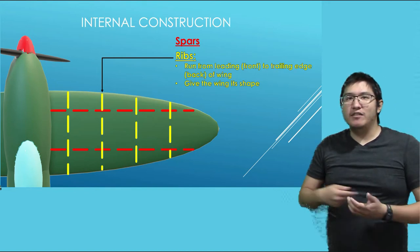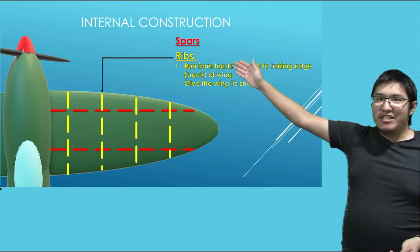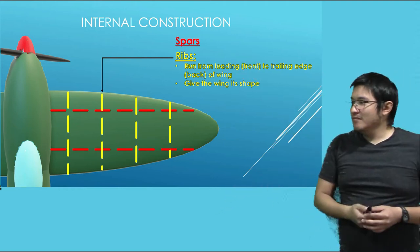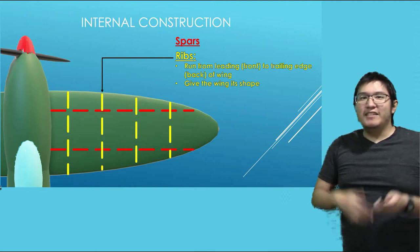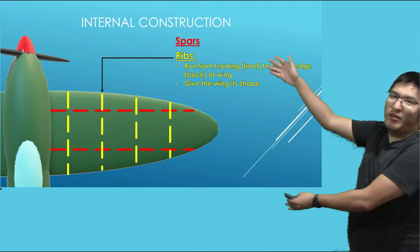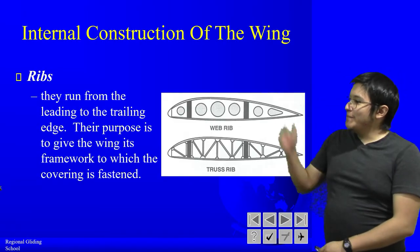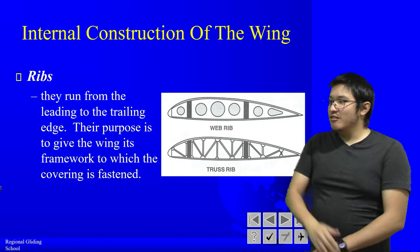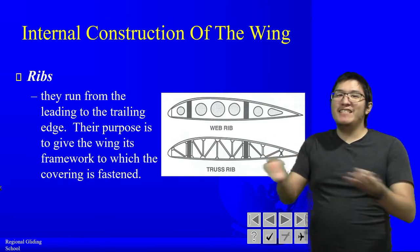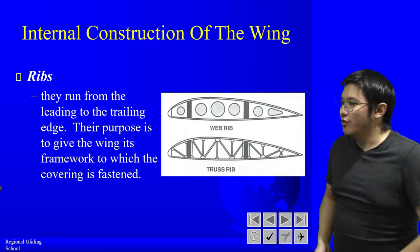Next up, we have the ribs. The ribs run from the leading edge of the wing down to the trailing edge — think of it like your own ribs. Airplane wings also have ribs, and they give the wing its framework, its shape — that unique Bernoulli-like shape you may or may not have seen before.